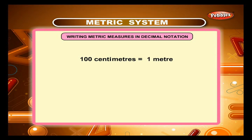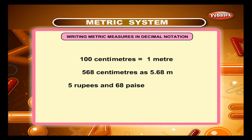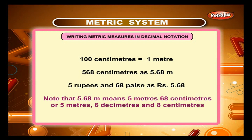Writing metric measures in decimal notation: since 100 centimetres is equal to 1 metre, you can write 568 centimetres as 5.68 metres — just as you write 5 rupees and 68 paise as ₹5.68. Note that 5.68 metres means 5 metres 68 centimetres, or 5 metres 6 decimetres and 8 centimetres.